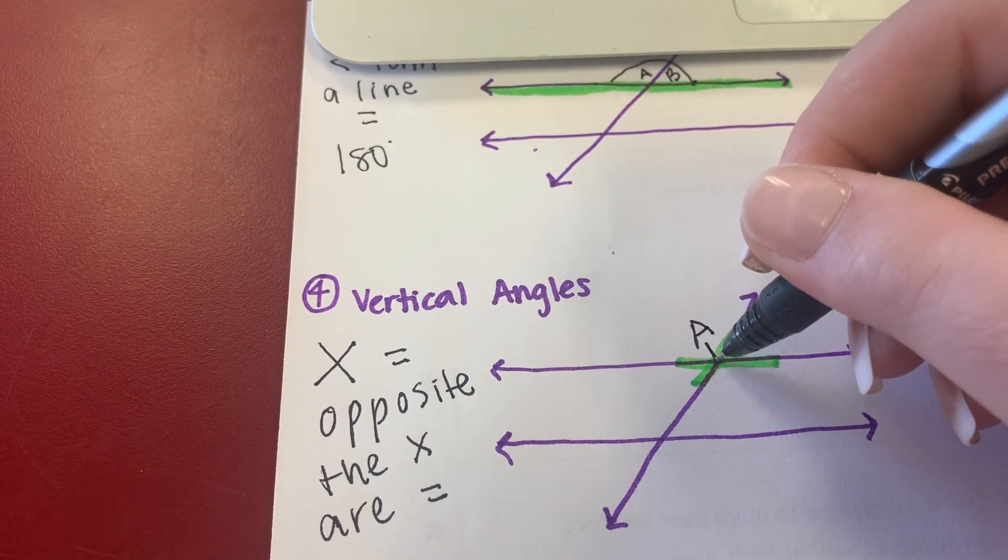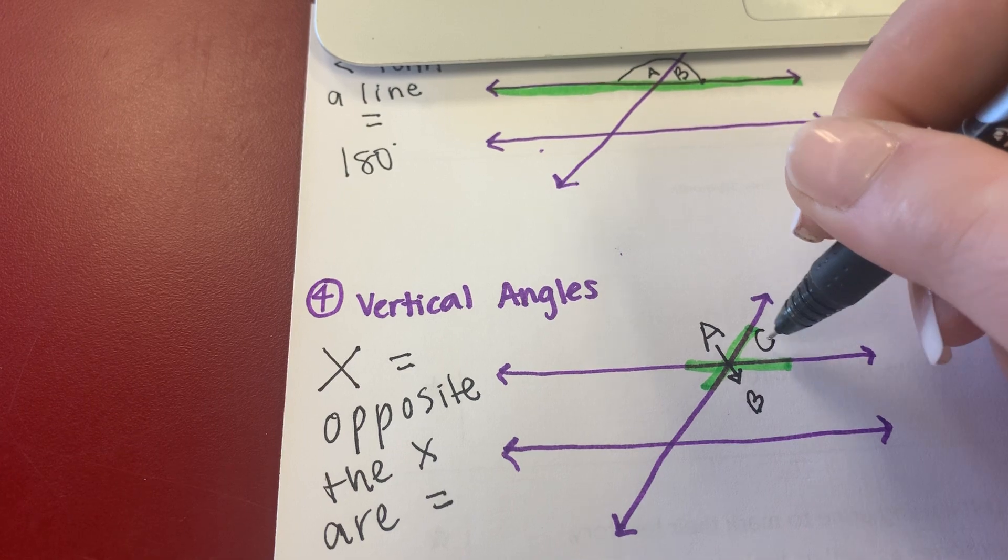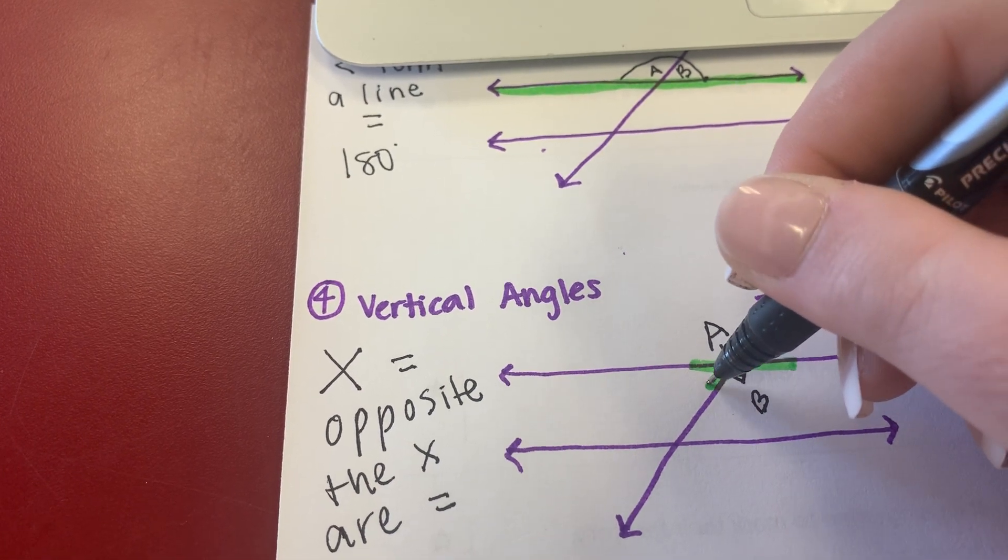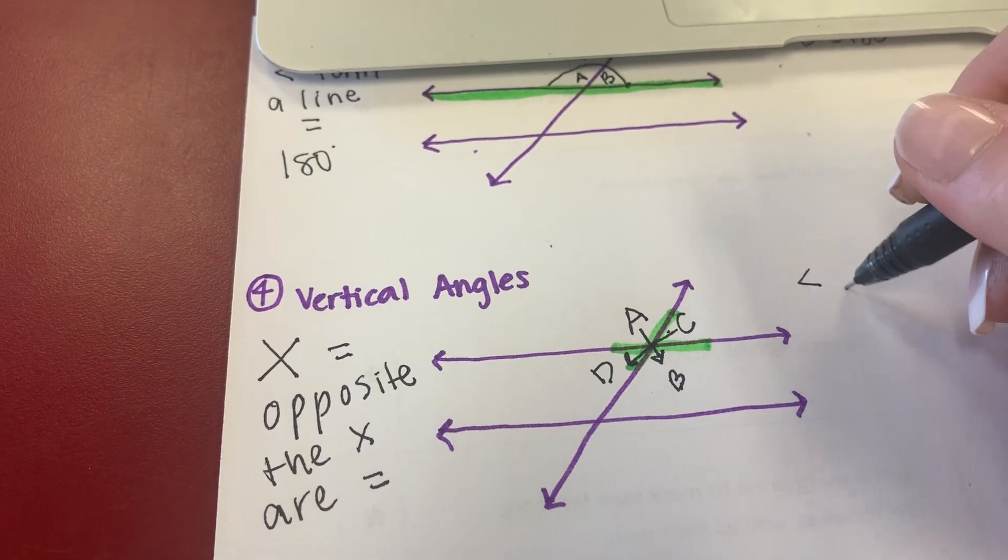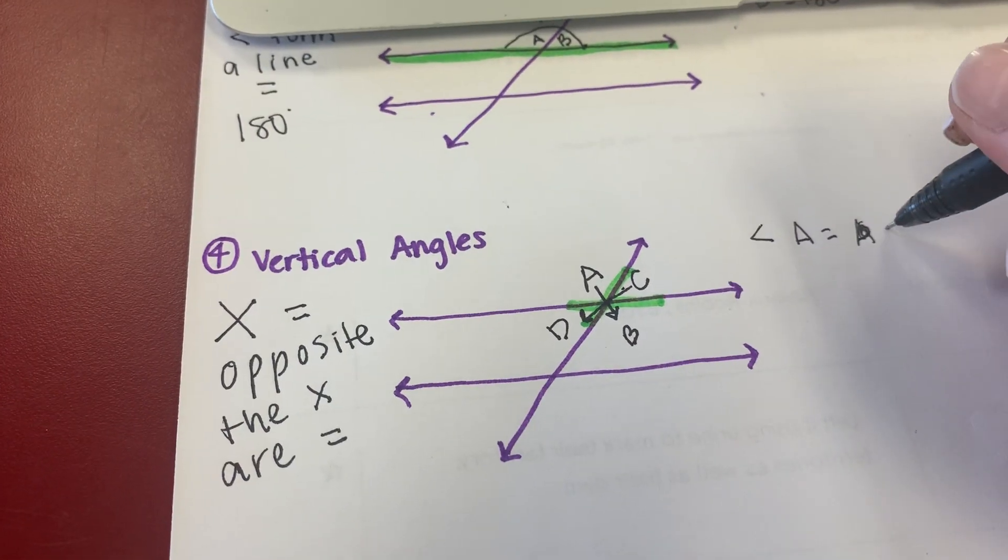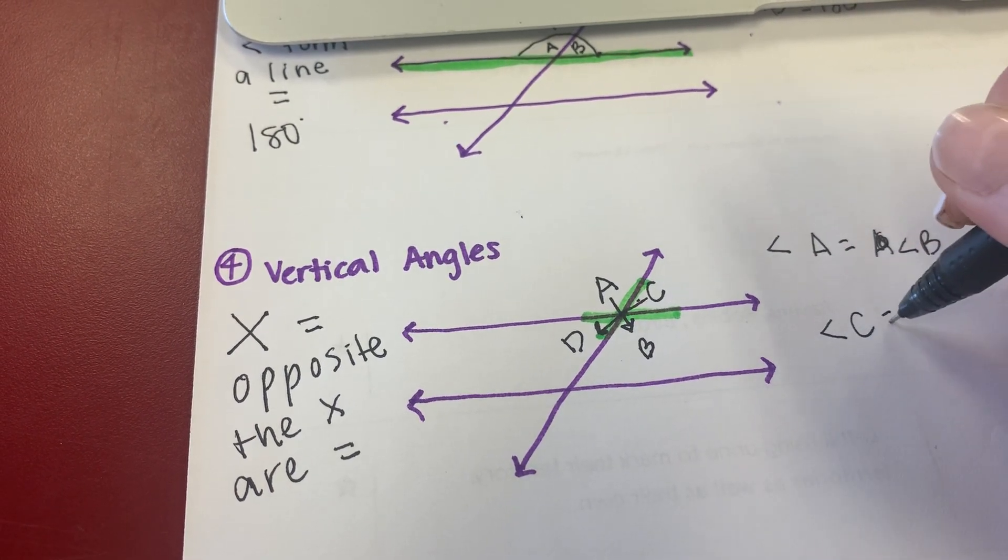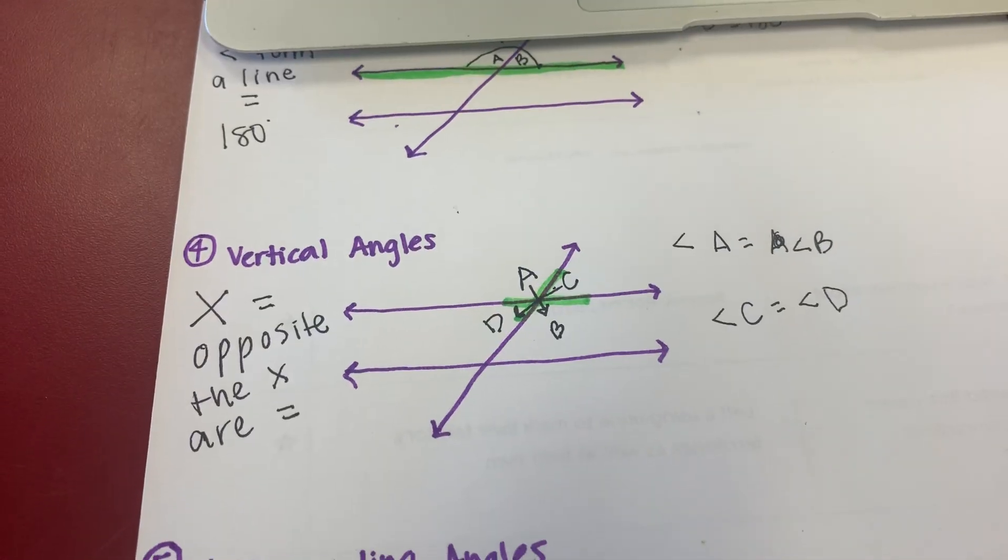So if I have an angle here, what is opposite here? If I have one here, what is opposite here? So that means angle A equals angle B and angle C equals angle D. That's a vertical angle.